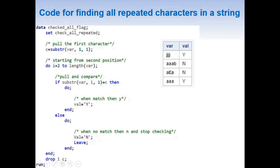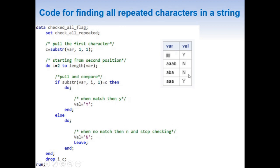Now for the third row, the DO loop runs from i=2 to 3 since the length is 3. On the first iteration the IF statement becomes IF SUBSTR(var, 2, 1) = c. We extract the second character and compare it with the first character. As they are not the same, the condition fails and we go to the ELSE statement, which maps the value to N and also stops the loop using a LEAVE statement. The final value for this row is N.